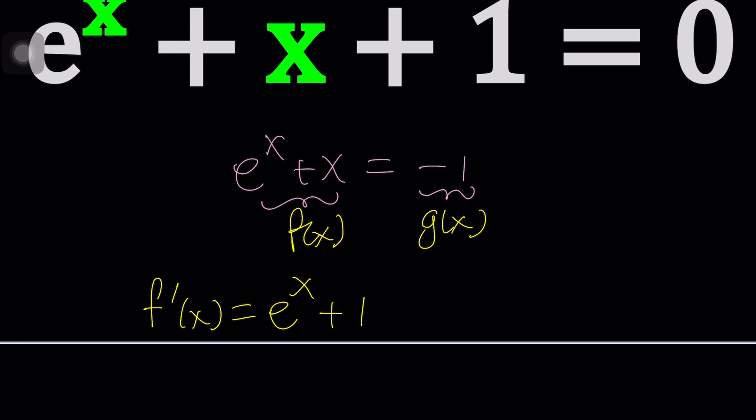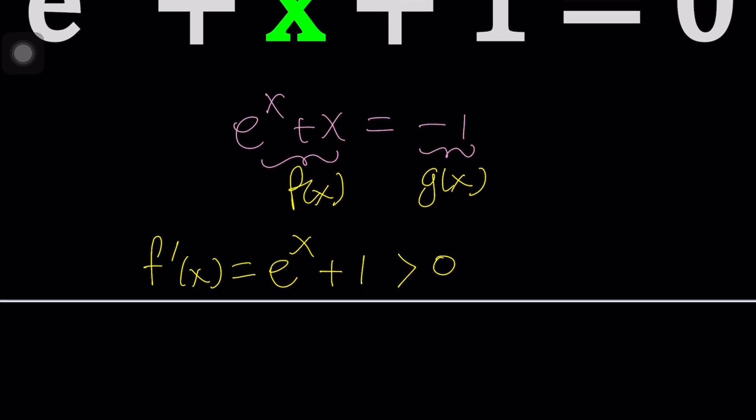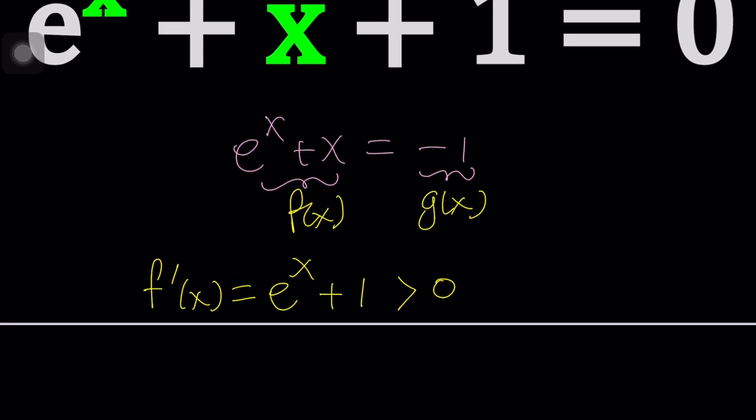So the derivative of E to the X plus X is E to the X plus 1, which is always positive. Because E to the X cannot be negative, cannot be even 0, unless X is negative infinity, which is not a number. So plus 1, definitely going to be positive.